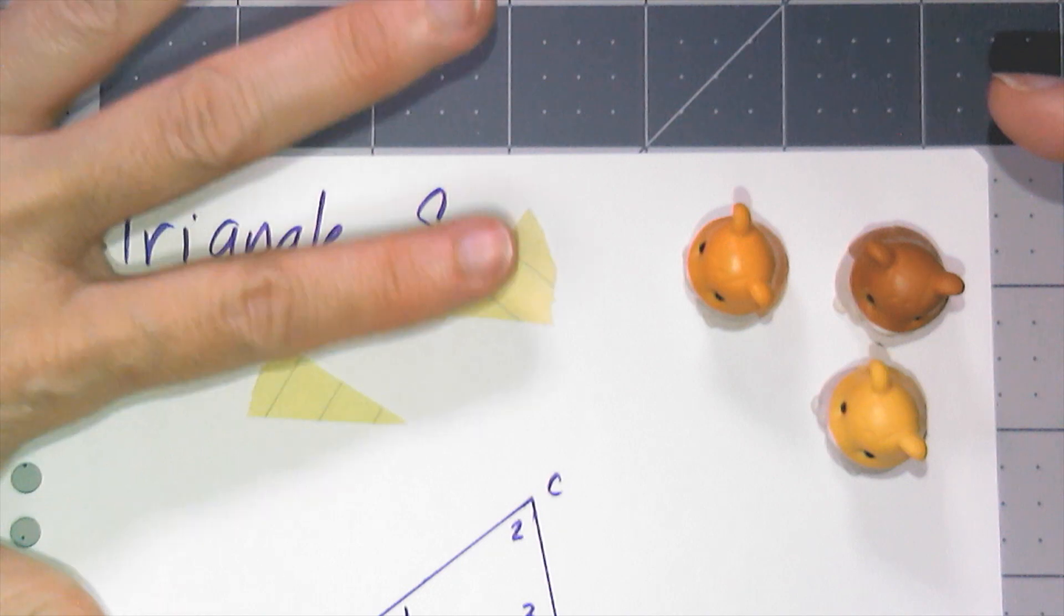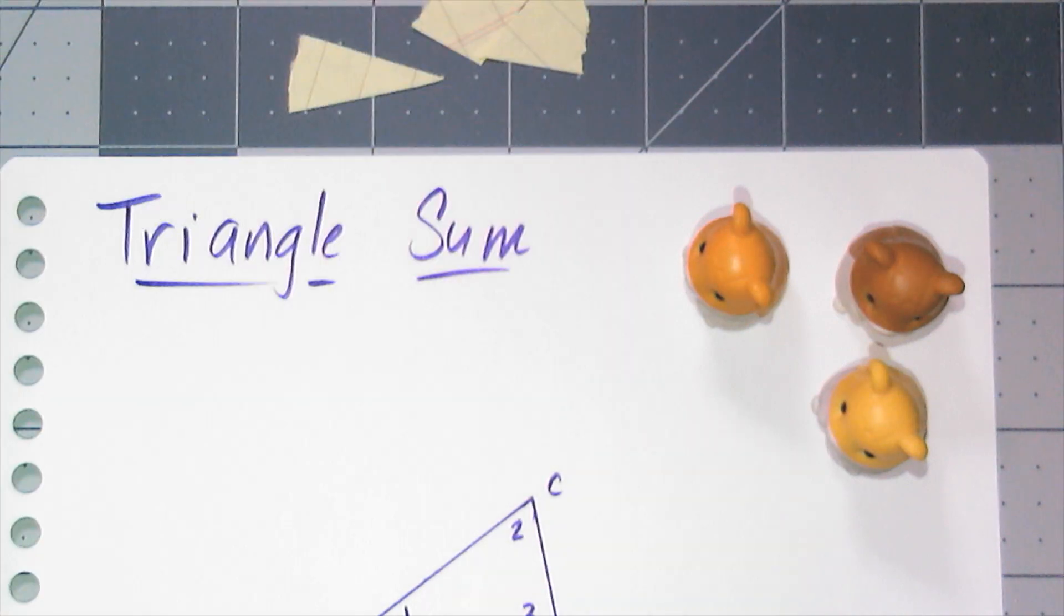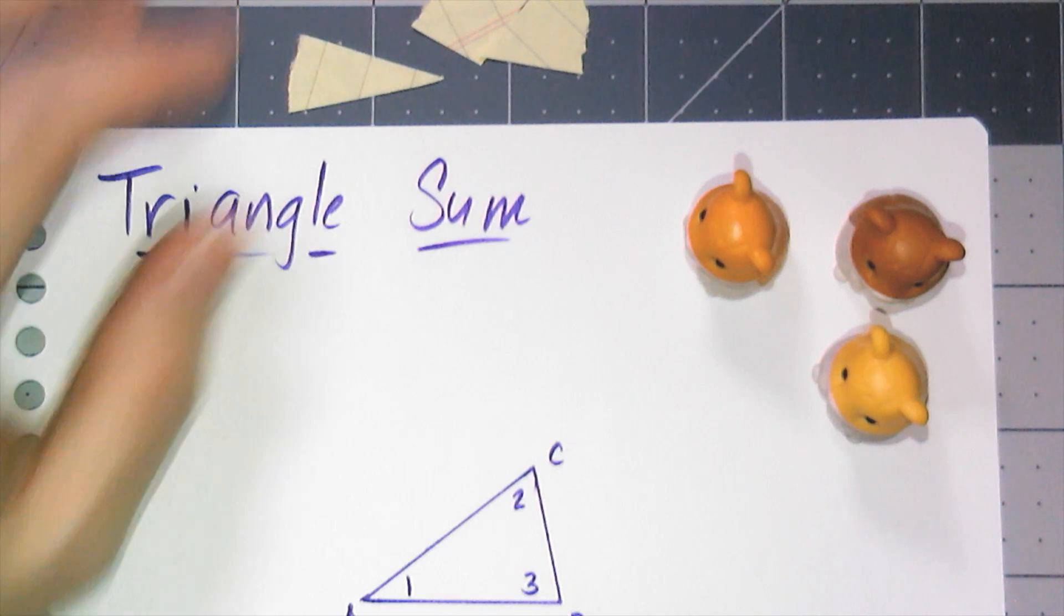And something very important that we haven't been able to do until now, and that is add in extra information by constructions. So if I asked you right now just to prove that those three angles, when you add them together, are going to equal 180, like where do you start? I don't have much, all I have is a triangle.